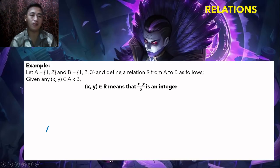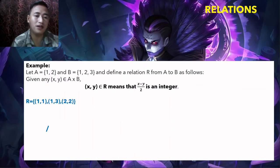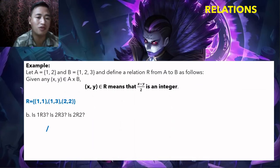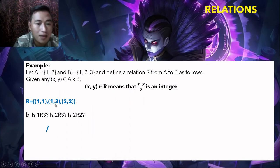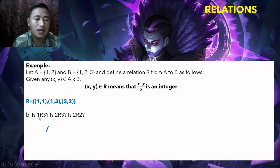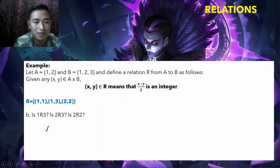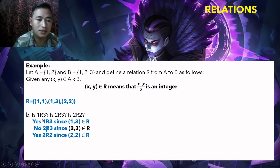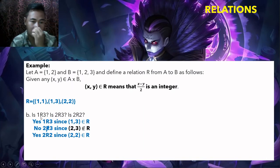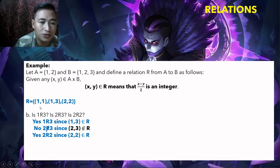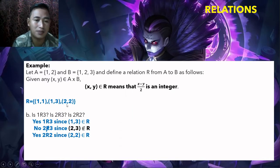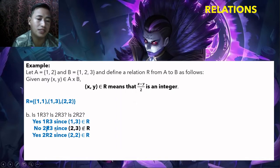Questions: Is 1 related R to 3? Yes — (1, 3) is an element of R, so 1 R 3. Is 2 R 3? No — (2, 3) is not in R. Is 2 R 2? Yes — (2, 2) is in R. So 1 R 3 is yes, 2 R 3 is no, and 2 R 2 is yes.